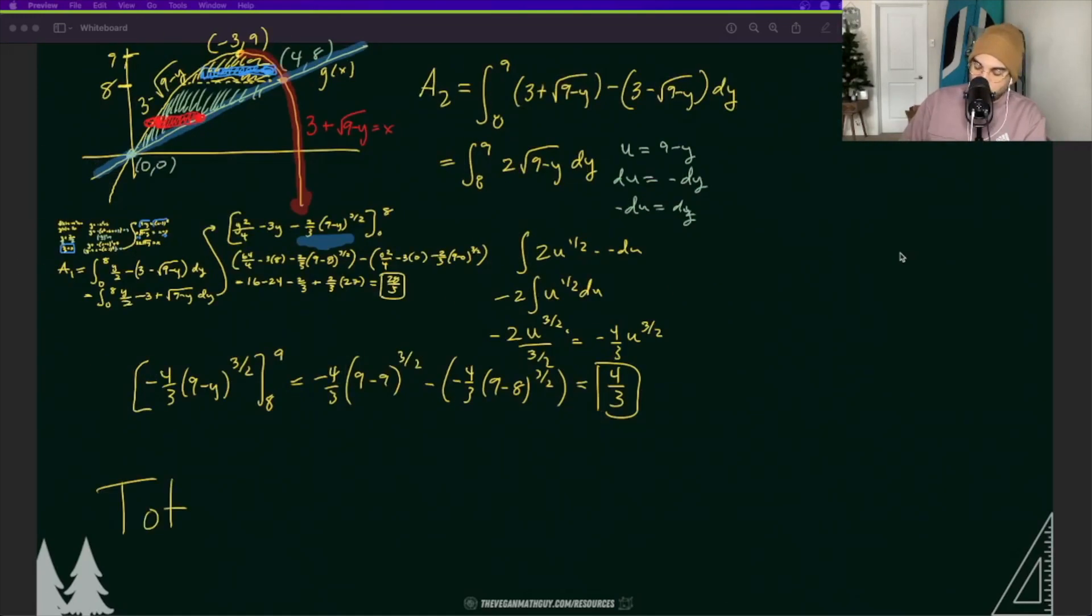So remember that the total area is equal to area one plus area two. Area one was equal to 28/3 and area two was equal to 4/3. Adding those together is 32/3. And that is exactly the area that we got when we integrated this in terms of x. I hope you had fun.